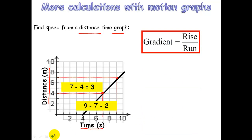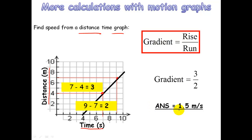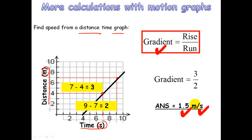Write down the formula for gradient: rise divided by run. Substitute the numbers in — 3 divided by 2 — and we get an answer of 1.5 metres per second. You get a mark for the correct formula, possibly for the correct answer, and for the correct units. Units are incredibly important.